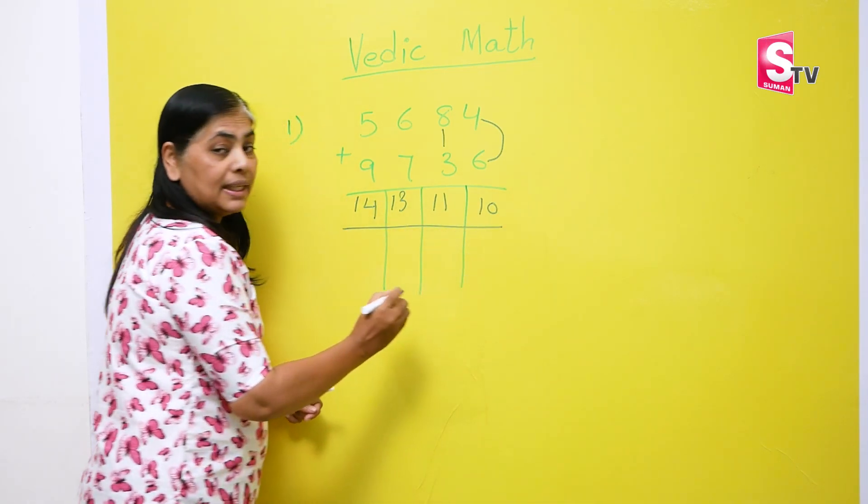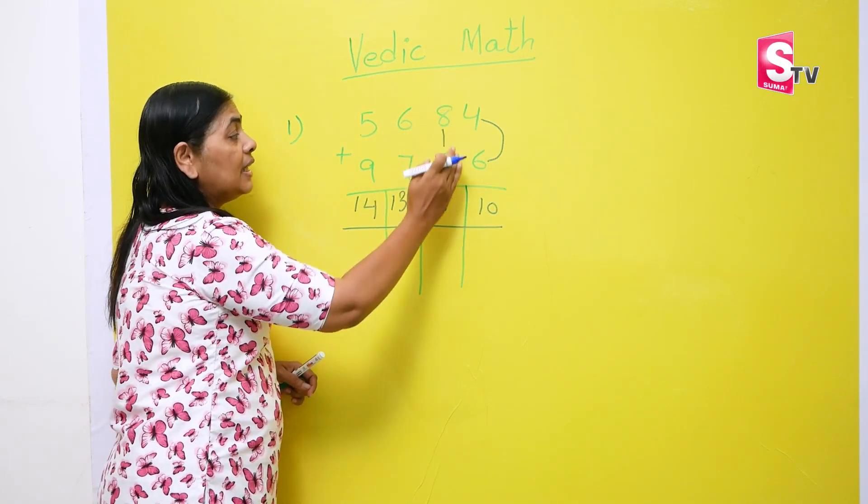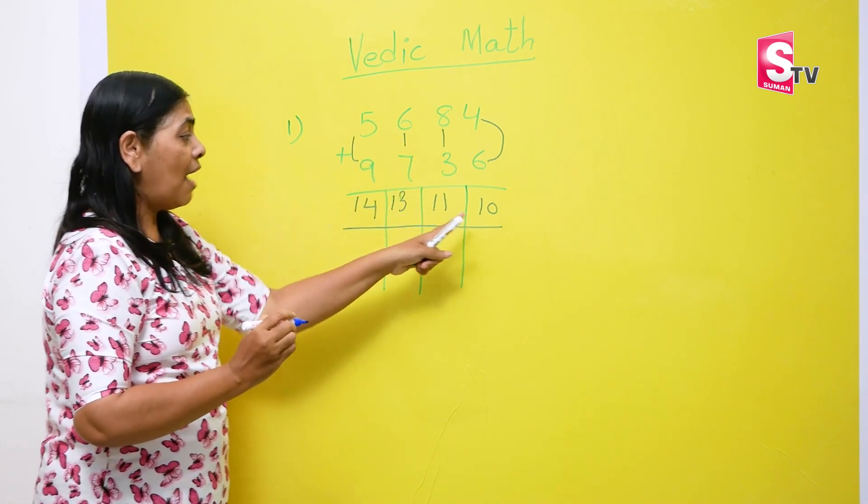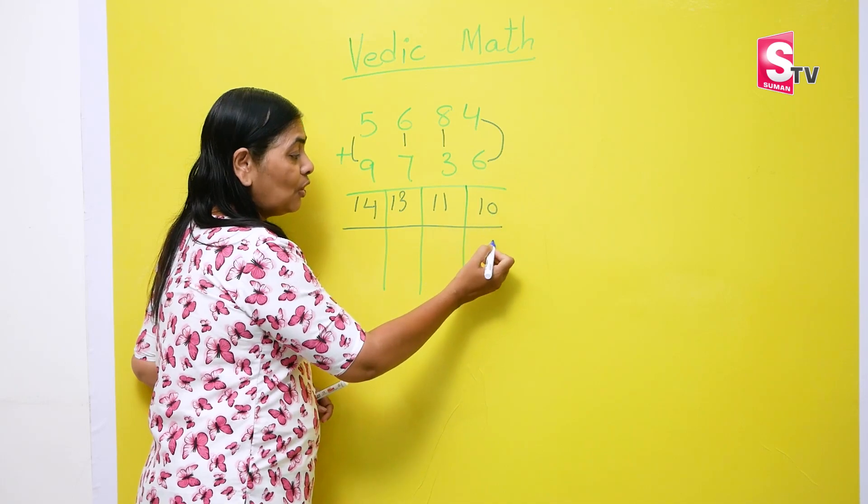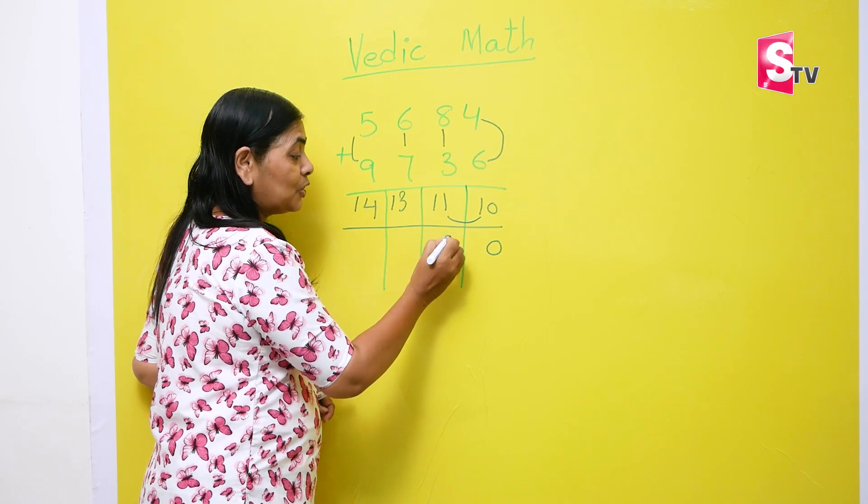So once this is done, what we'll be doing is, we'll be writing the answer. This is not the final answer. This is individually what we have added. After this, we will be writing the final answer. So 0, we'll write here as it is. 1 goes to 1. So 1 plus 1 becomes 2.